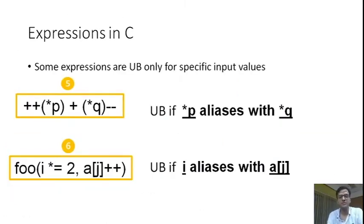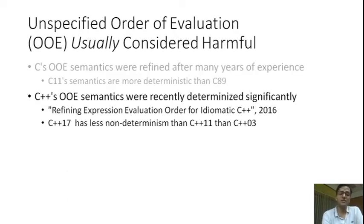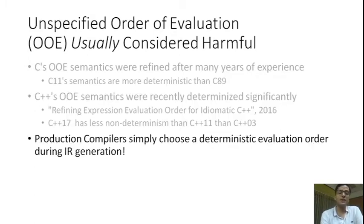To summarize, some expressions exhibit undefined behavior only for specific input values. In the literature, unspecified order of evaluation has usually been considered harmful. For example, C11's OOE semantics contain less non-determinism than C89's. Similarly, C++ semantics for OOE have been recently determinized significantly, as detailed in a 2016 paper. C++17 has significantly less non-determinism than both C++11 and C++03 in the semantics of its order of evaluation of expressions. This is also reflected in compilers, which tend to generally ignore the non-determinism present in OOE semantics.